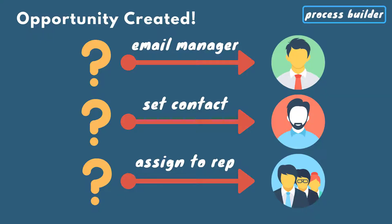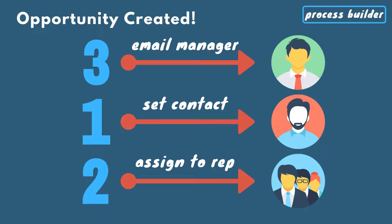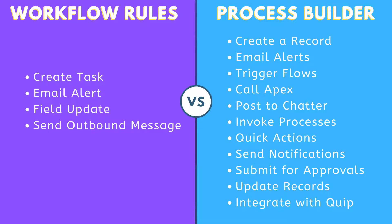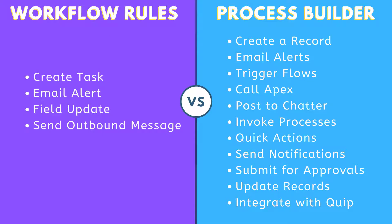So now, instead of randomly triggering our three actions when an opportunity is created, we can deliberately set the primary contact, then assign the sales rep, then email our manager in sequence. Process Builder also introduced a bunch of really cool new features. Unlike workflow rules that have a very limited set of actions, Process Builder allows you to create records, update fields on any related record even if twice removed, make a Chatter post, submit a record for approval, launch a flow, invoke other processes, and call Apex classes. Between workflow rules and Process Builder, Process Builder takes the cake, and if you're a net new admin it should really be your go-to tool to start off with.